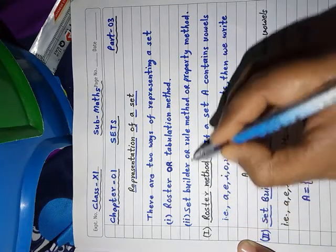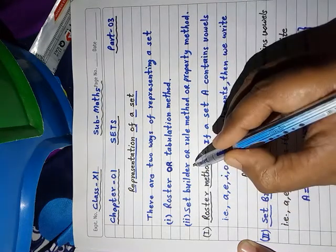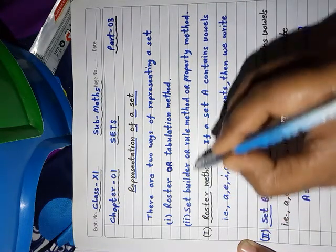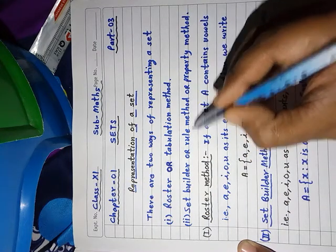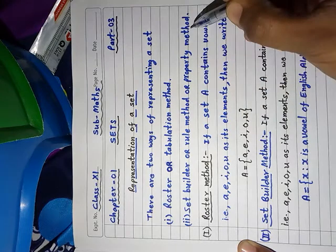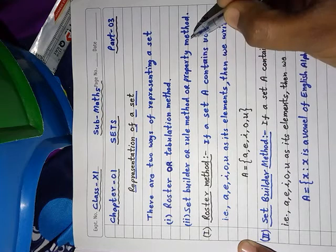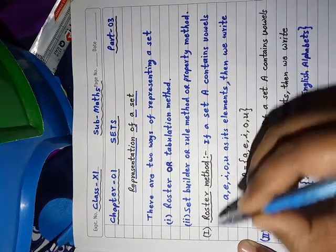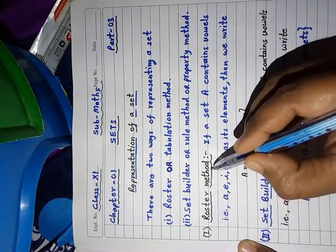In the second, set builder or rule method or property method, set builder means building up sets, rule method means there is a definite rule in the elements, and property method means there is a definite property in the elements. Now let's discuss thoroughly the first roster method.